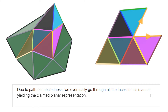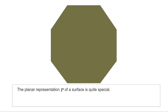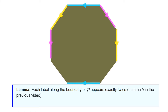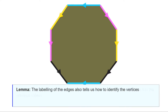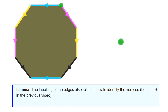Using the proposition, we now want to classify up to homeomorphism all compact and path-connected surfaces described by planar representations. The planar representation of a surface is special: the way in which we identify edges and vertices must produce Euclidean neighborhoods. Arguing as in Lemma A from the previous video, we deduce that the sides of the polygon must be identified in pairs. As we stated before, the colors also tell us how the vertices are identified, by reasoning similar to Lemma B.